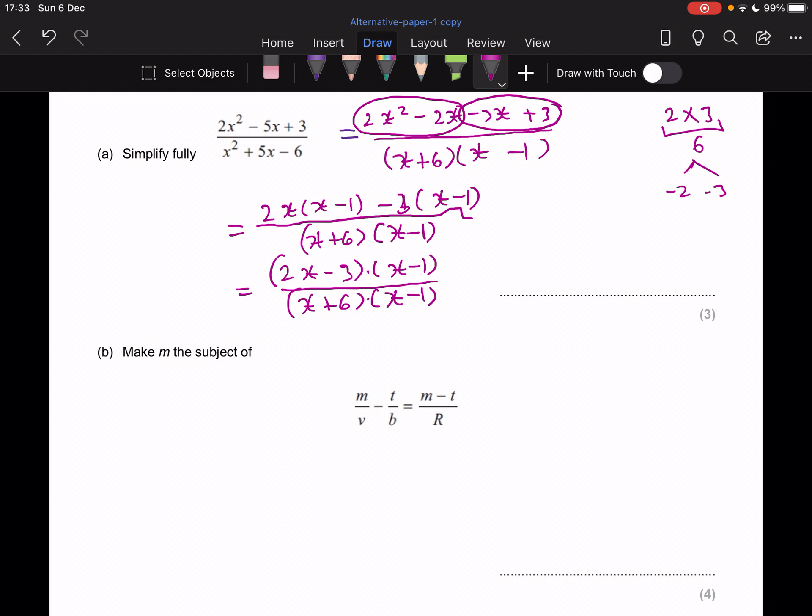For part B, it's asking me to make M the subject. So there are quite a few ways to do this. I'm going to give them all the same denominator. So I've got V, B, and R.